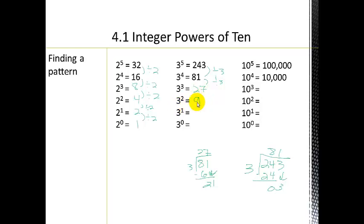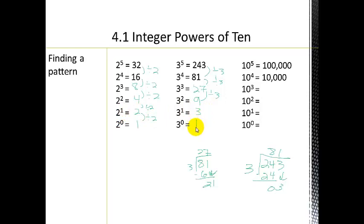Continuing the pattern for powers of 3: 27 divided by 3 is 9, and 9 divided by 3 is 3. So 3 to the first power is 3, just like 2 to the first power is 2. Then 3 divided by 3 is 1. Let's go ahead and finish the table for powers of 10 — 10 to the 5th down to the 1st — and see if we see that same pattern.